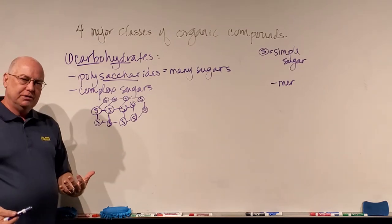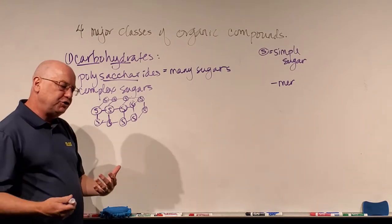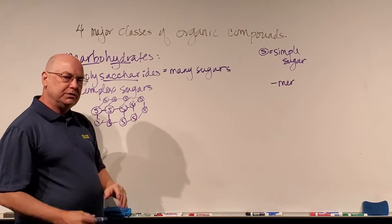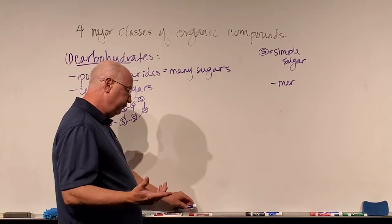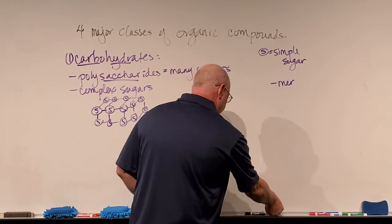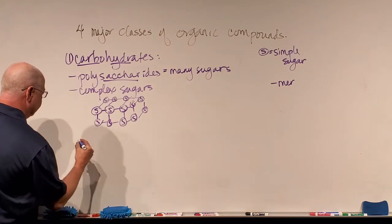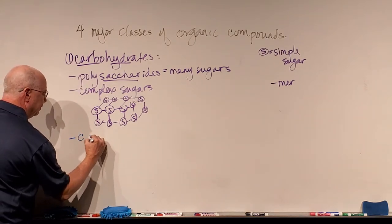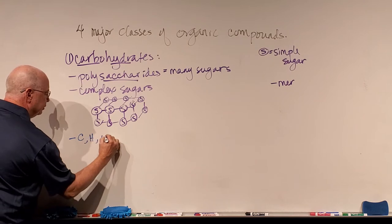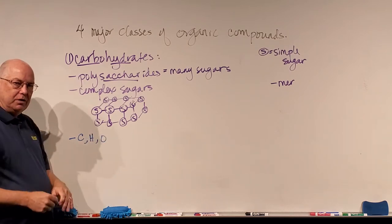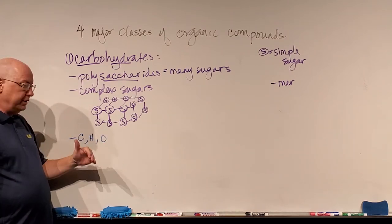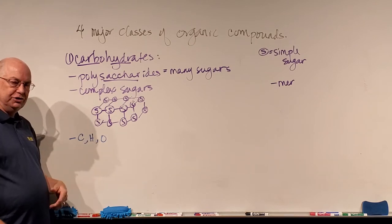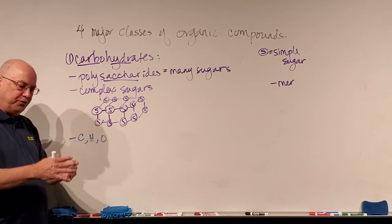In nature, Mother Nature stores sugars as polysaccharides. All the atoms found in carbohydrates are going to be carbon, hydrogen, and oxygen. All simple sugars and all polysaccharides have carbon, hydrogen, and oxygen in them in some form.